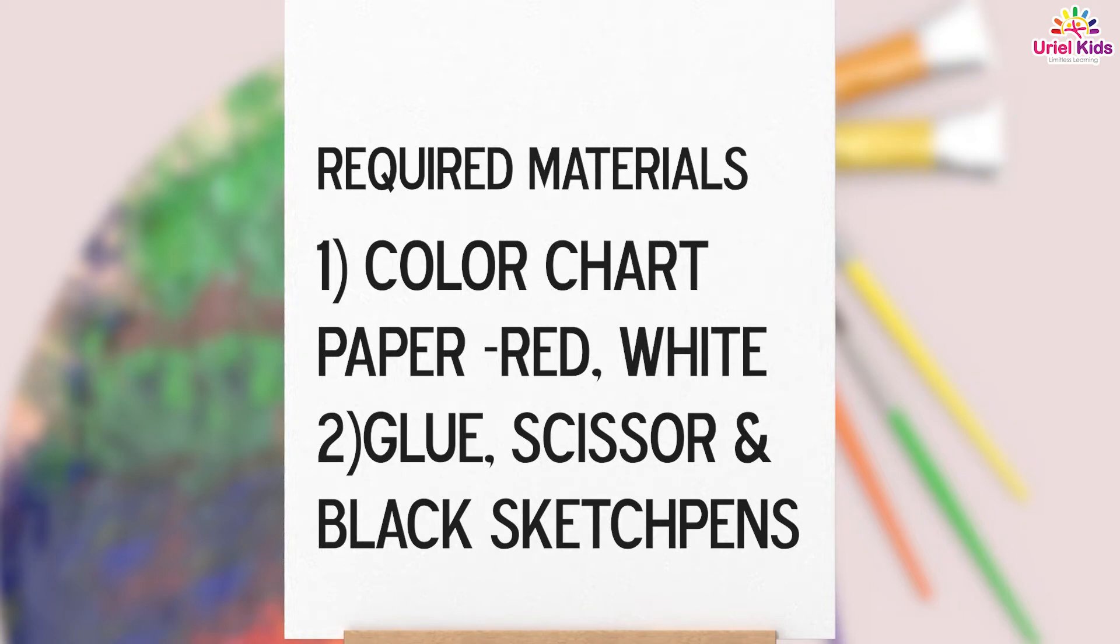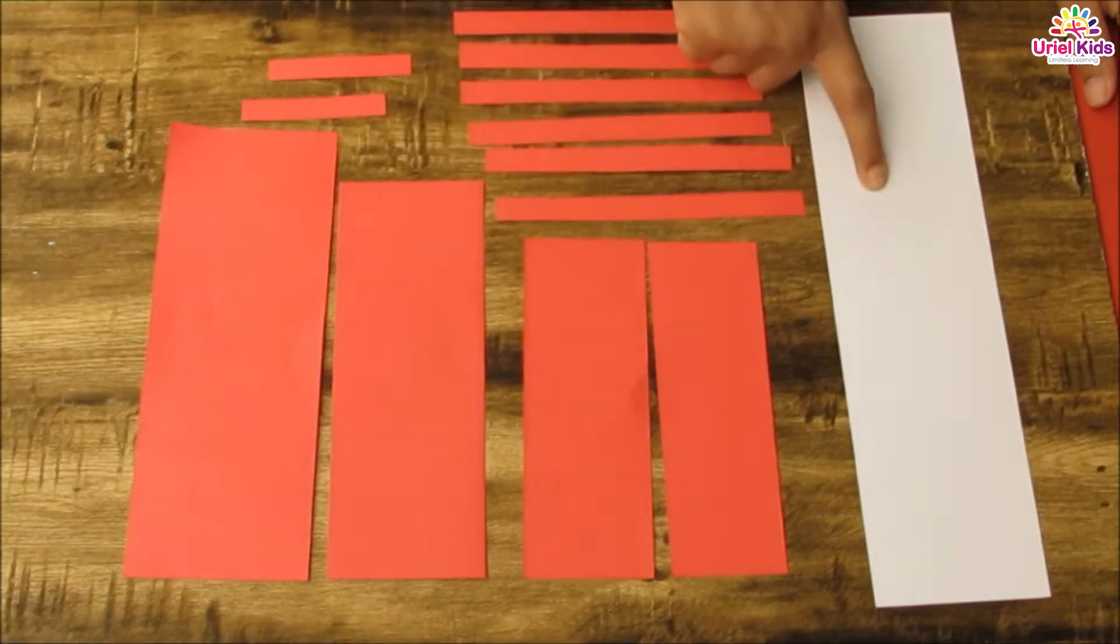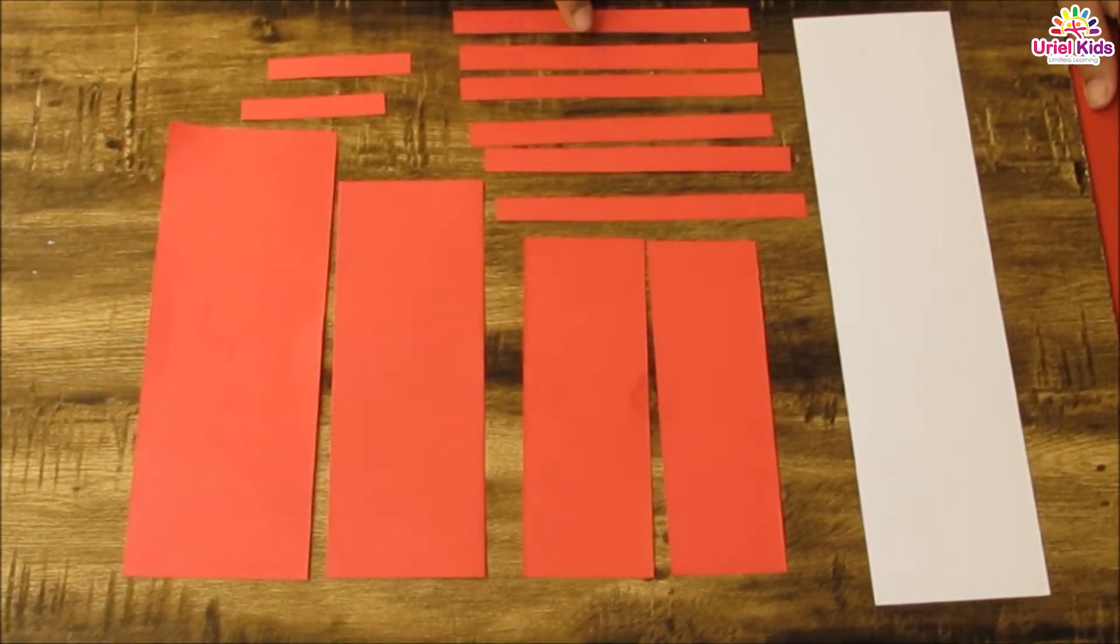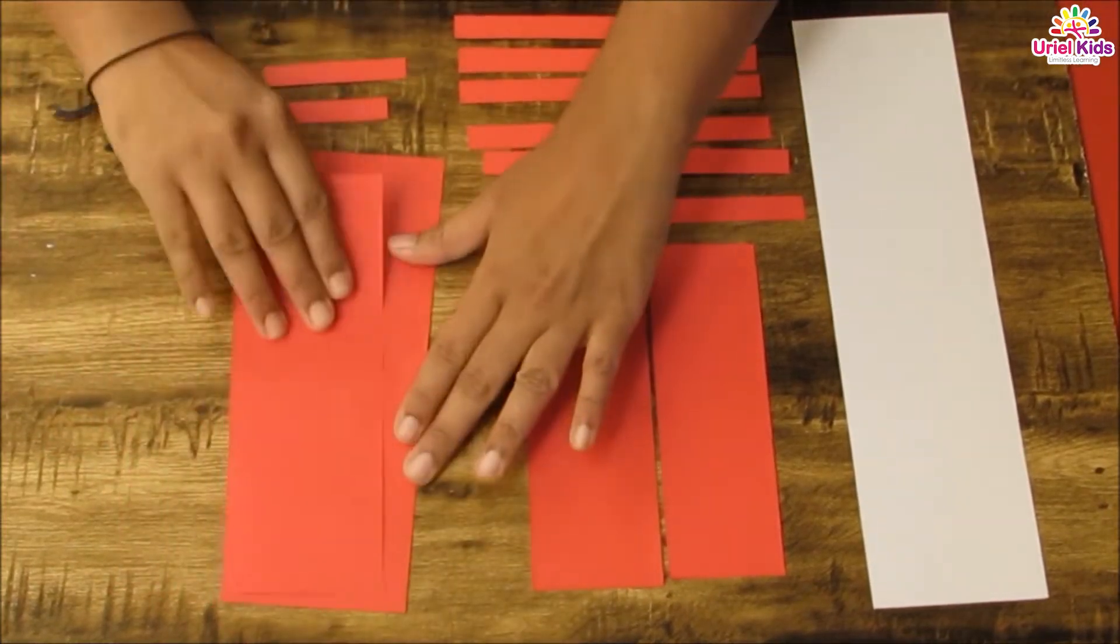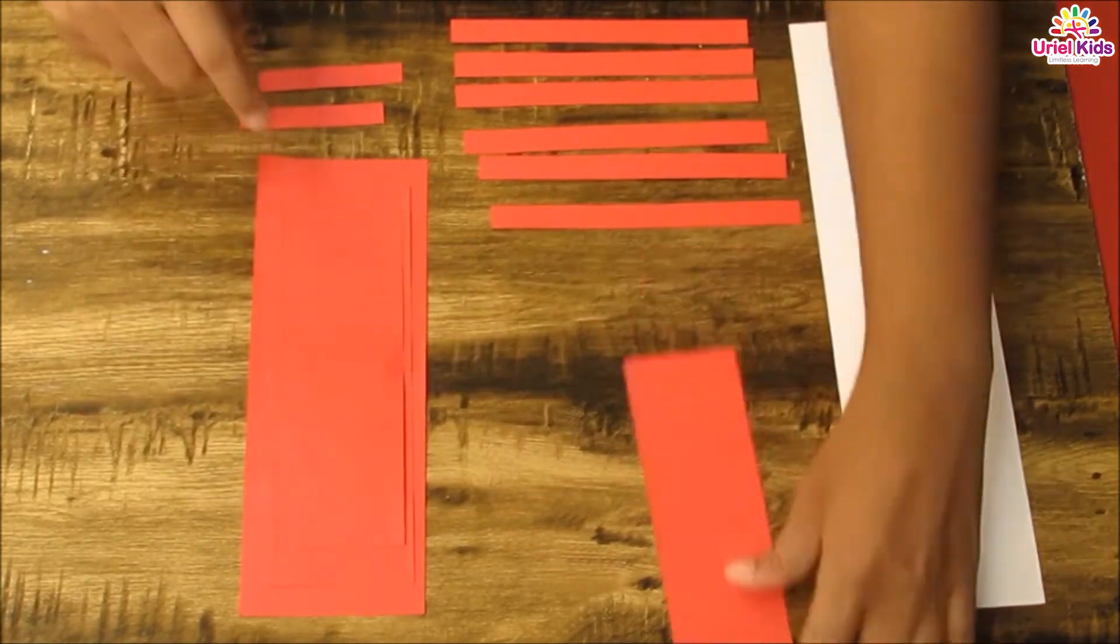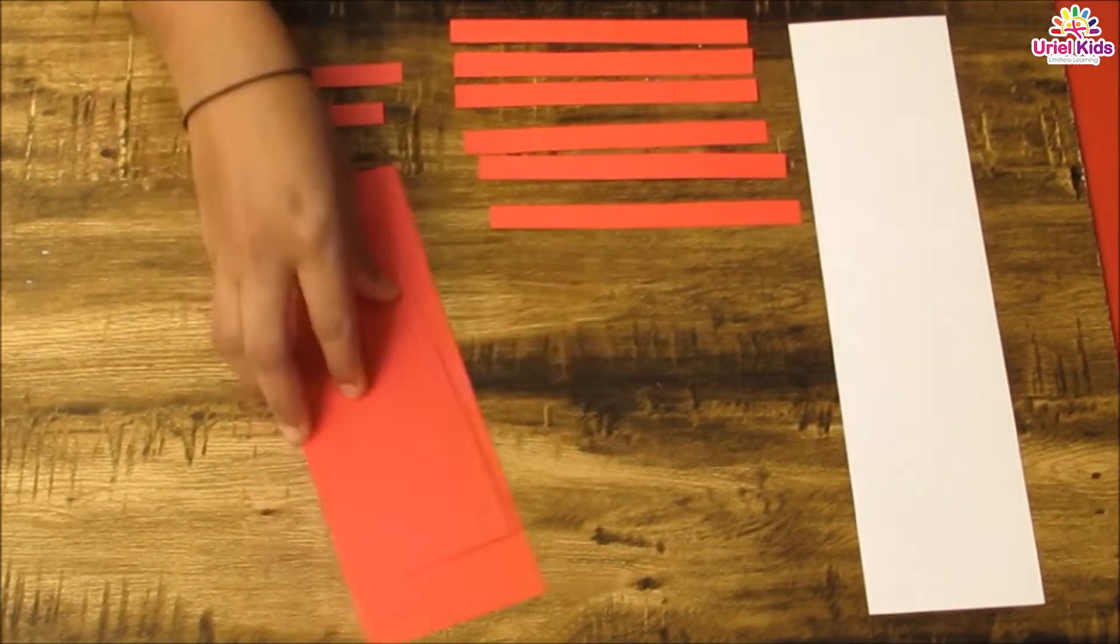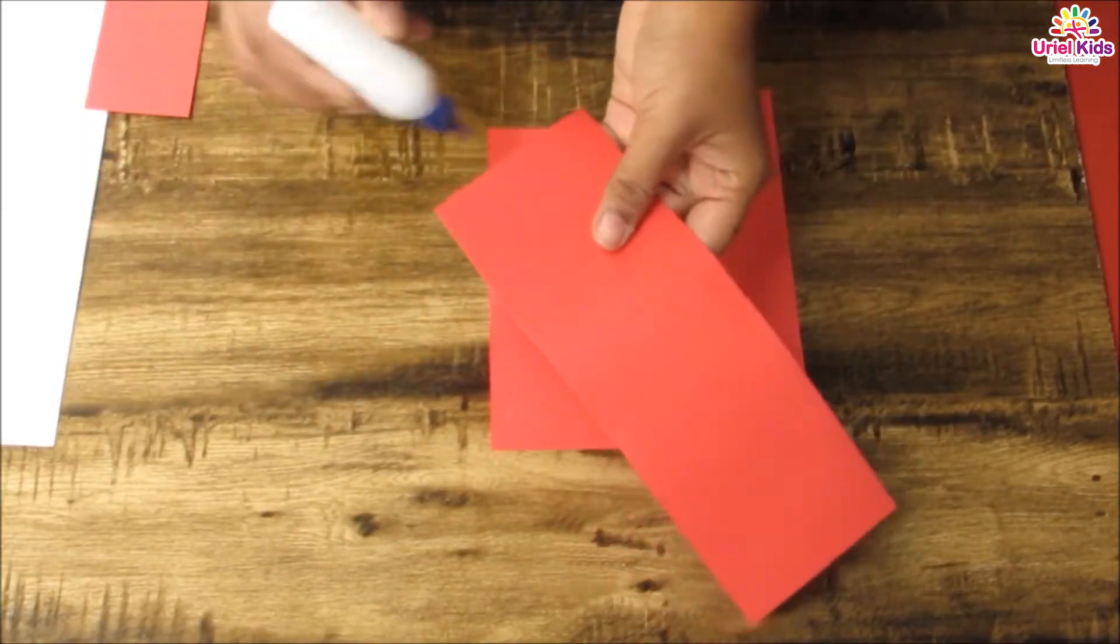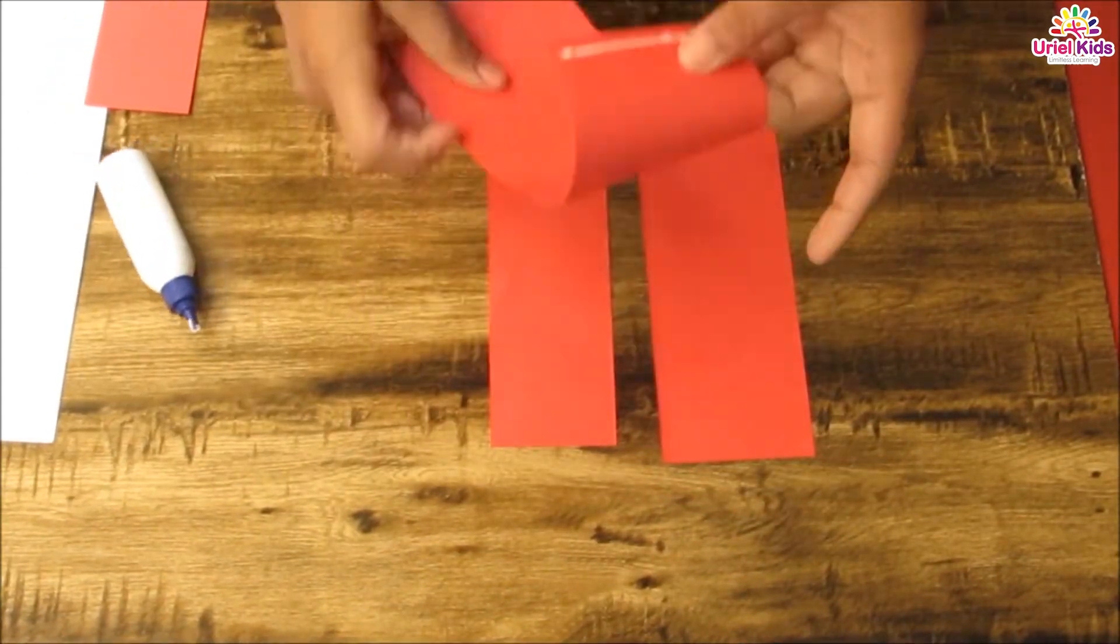Cut the paper into rectangle shapes of different sizes as shown. You can take the help of an adult. Let's roll each rectangle shape paper and stick it as shown.